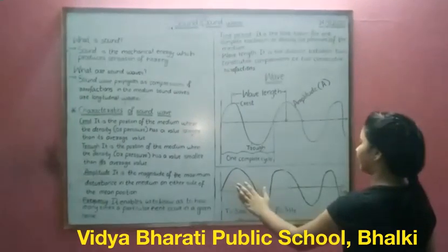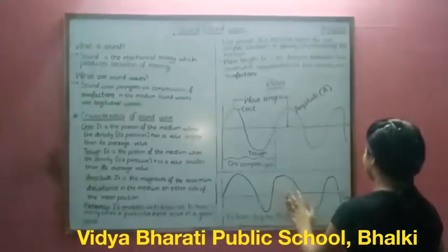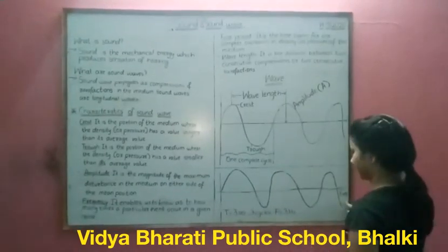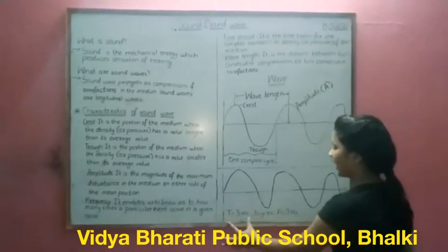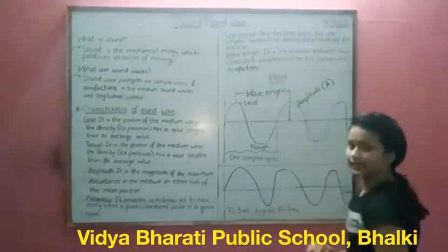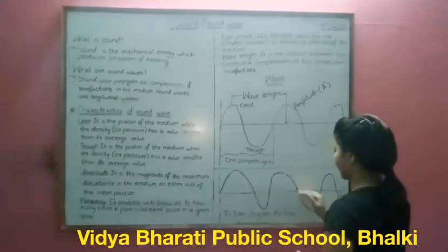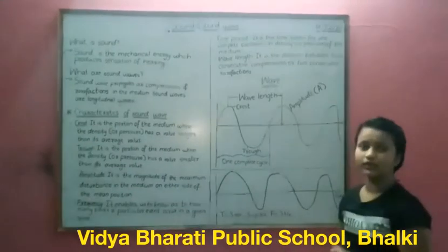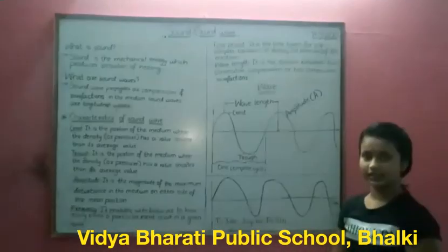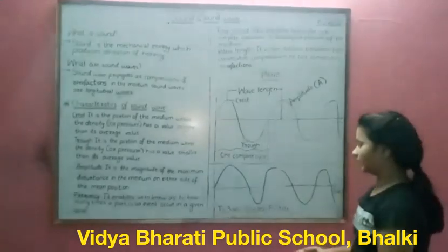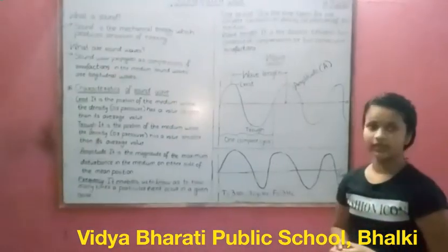This is the diagram of frequency and time period. The time taken per cycle is three seconds, so the time period is three seconds. There are three cycles, so the frequency is equal to three hertz.